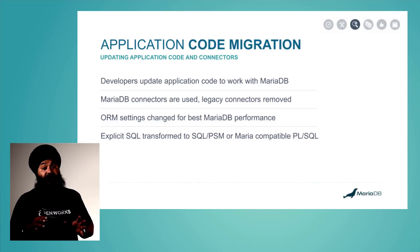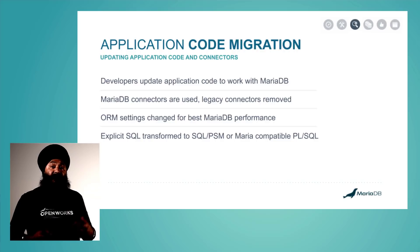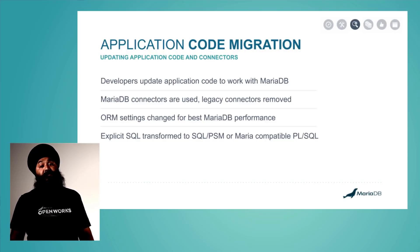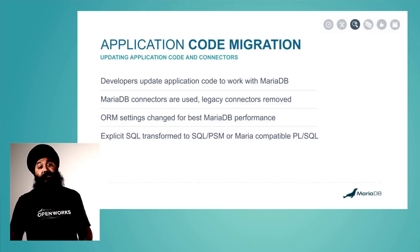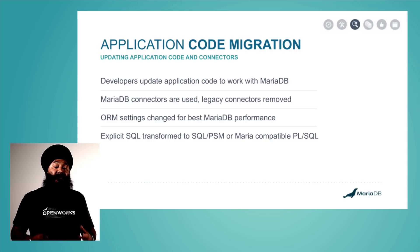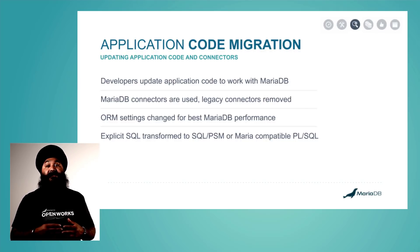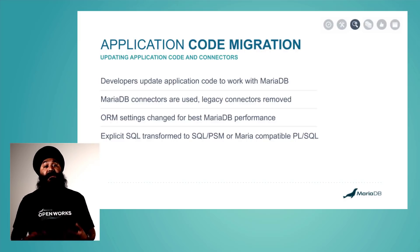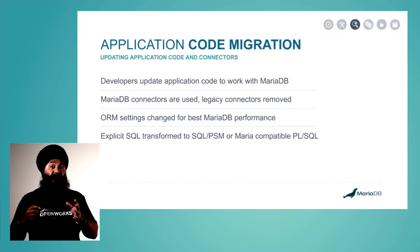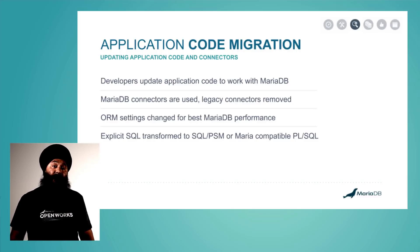During the SQL code migration, you also want to have the application code migration going in parallel. Have your developers update application code to work with MariaDB — begin using those MariaDB connectors, remove the legacy database connectors, and change your ORM settings for good MariaDB performance. For example, make sure Hibernate is building good queries, ensure it's up to date, and building queries that work well with MariaDB and not necessarily MySQL 5. You want to transform explicit SQL to SQL PSM or MariaDB-compatible PL/SQL, working closely with the development team and other project owners.